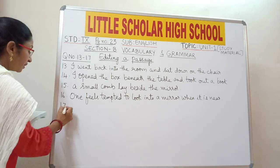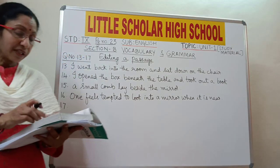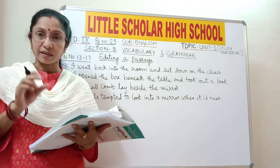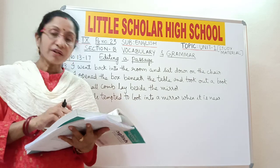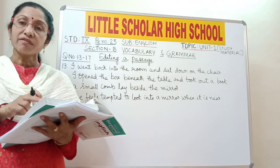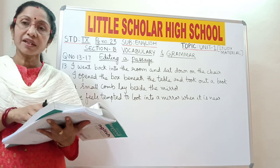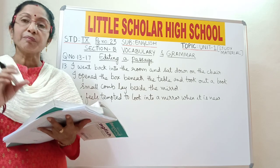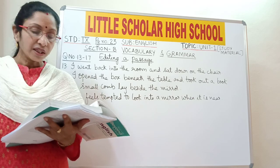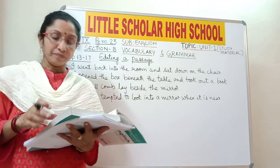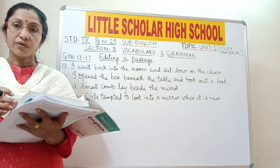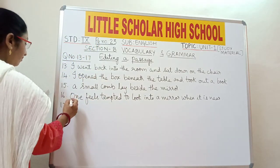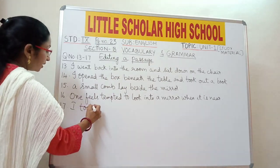Question number 17: 'I took look' — you cannot say 'I took look.' Here 'look' means one look, so you should say 'I took a look.' One word 'a' is missing. Insert the article 'a': 'I took a look.'